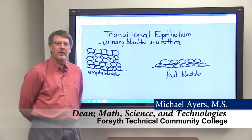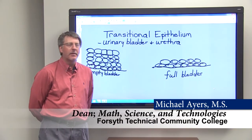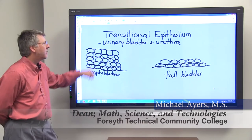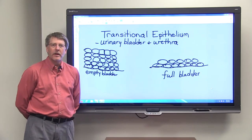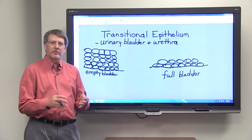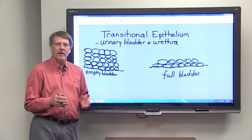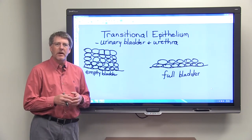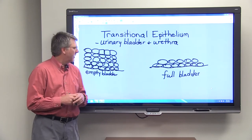Transitional epithelium is a special type of epithelium that's found in the urinary bladder and the urethra. The urinary bladder stores urine, and as the urine fills up the bladder, the bladder has to be able to expand.